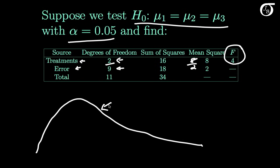So what I've drawn out here is an F distribution with 2 degrees of freedom in the numerator and 9 degrees of freedom in the denominator. Our F statistic was 4, somewhere over here.